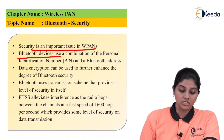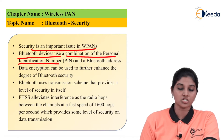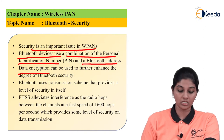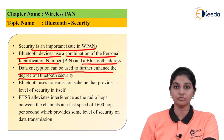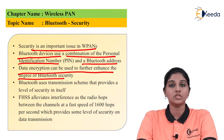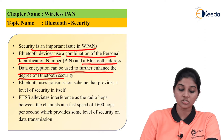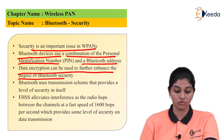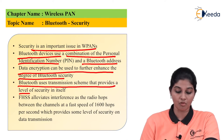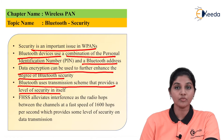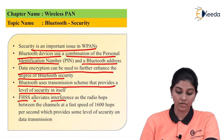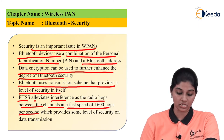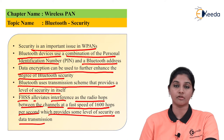Bluetooth devices use a combination of a personal identification number (PIN) and a Bluetooth address. Data encryption can be used to further enhance the degree of Bluetooth security. Bluetooth uses a transmission scheme that provides a level of security itself — frequency hop spread spectrum, where the radio hops between channels at fast speed, up to 1600 hops per second, which provides a level of security on data transmission.